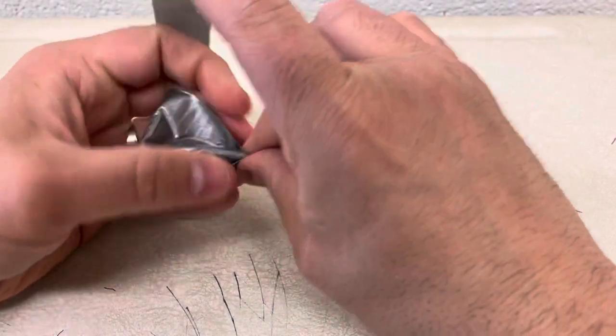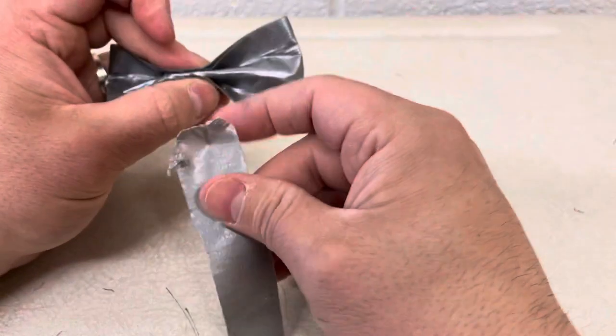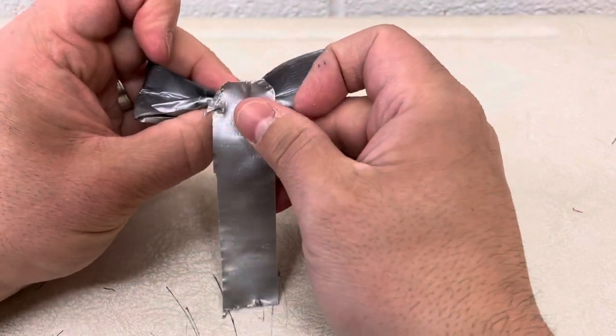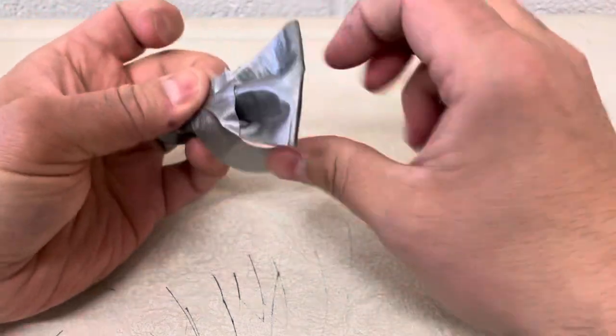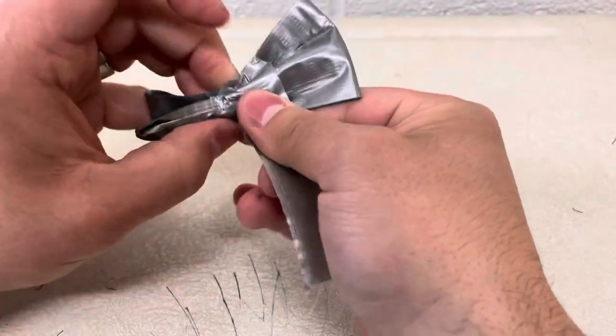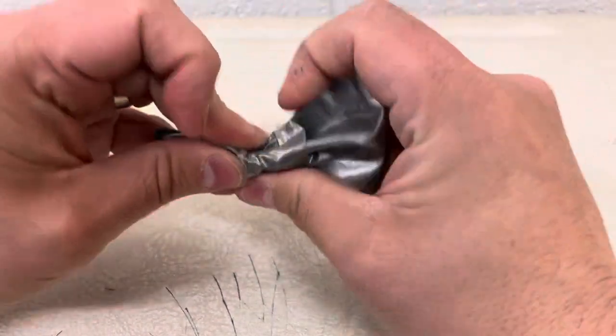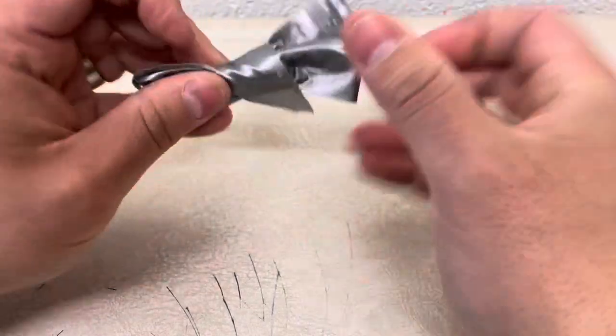Once you fold it like that and squeeze it together, you have essentially what will be your bow. You can get this piece to be a little bit thinner if you want, but I'm going to stick with this size. You're going to wrap this piece around the center of it, just like this, nice and tightly.